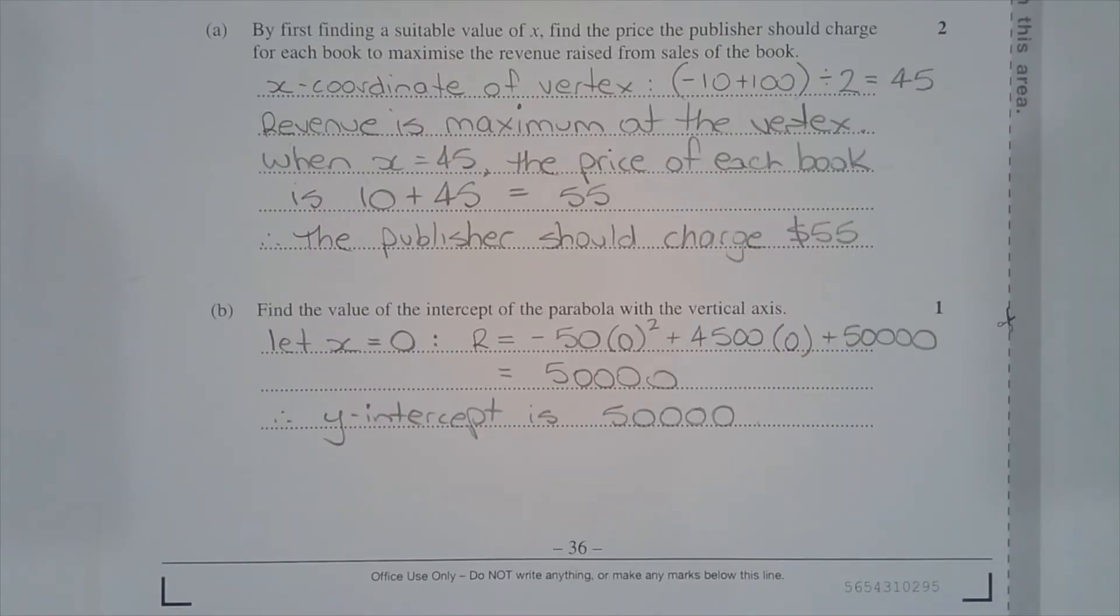The question is asking for the Y intercept and that occurs when X equals 0. Substituting X equals 0 into the equation, we get R is equal to negative 50 multiplied by 0 squared plus 4,500 multiplied by 0 plus 50,000. The terms in X disappear and we're left with a constant term.